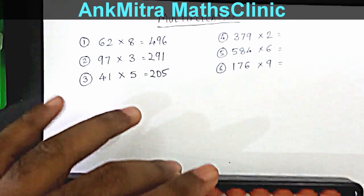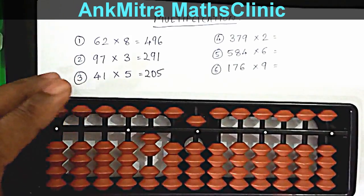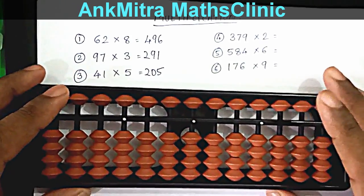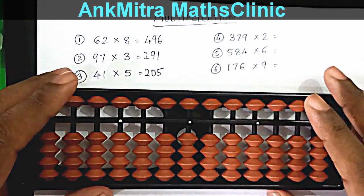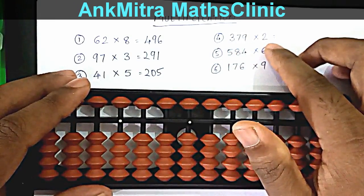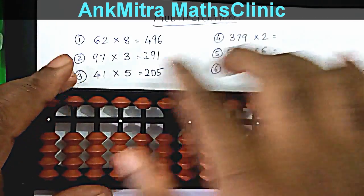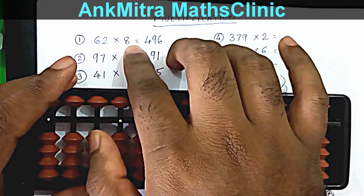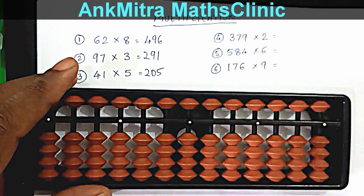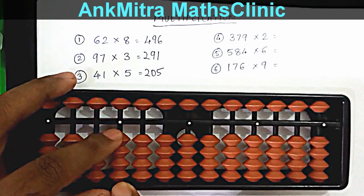Now the fourth example is a three-digit number multiplied by a one-digit number: 379 multiplied by 2. Since this is a three-digit number multiplied by a one-digit number, the answer will start on the fourth rod — the total answer will be a four-digit number.